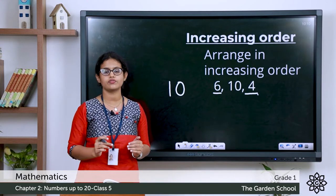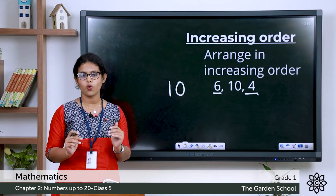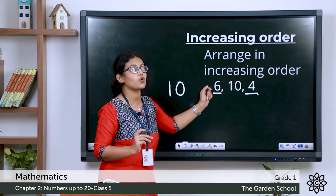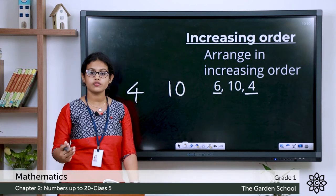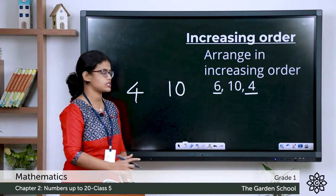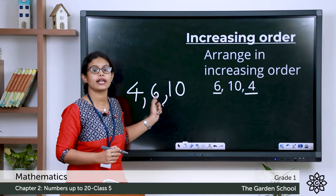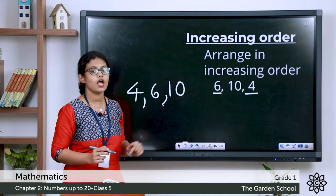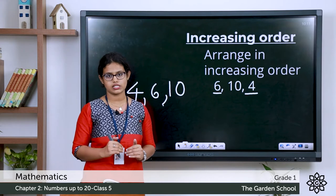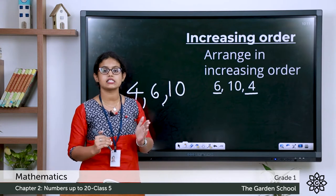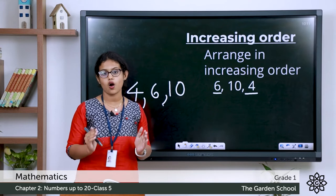In 6 and 4, which number is smaller? Let's count from 1: 1, 2, 3, 4 — so 4 comes first. Then after 4: 5, 6. So this is the correct order: 4, 6, 10. Four is the smaller number and 10 is the largest. So 4, 6, 10 is in increasing order.